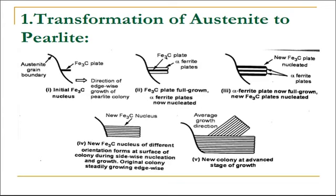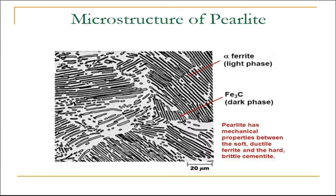This forms the pearlite colonies of alternate parallel plates of cementite and ferrite. These pearlite colonies grow until the entire austenite grain has been consumed and become a pearlite structure, as shown in various steps from figure 1 to figure 5. The microstructure of pearlite includes a white matrix of ferrite which contains thin plates of cementite which are black in color. The light or white phase is ferrite and the dark or black phase is cementite.